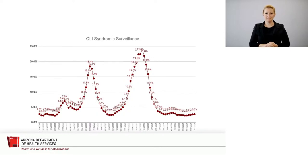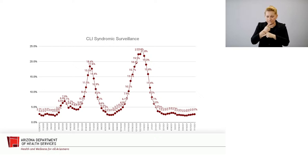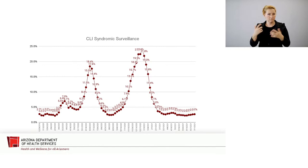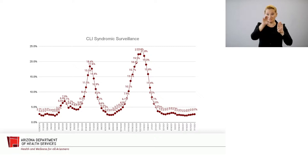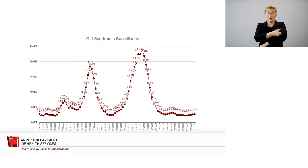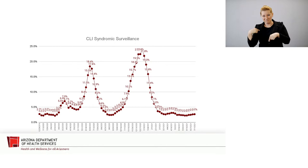The department uses syndromic surveillance to assess hospital usage and how much capacity is being utilized for syndromes similar to COVID-like illness. This was determined to be a very sensitive predictor for increases and decreases in hospital usage. Over the past couple of months, hospital usage has been relatively stable per syndromic surveillance, but we are seeing a slight uptick in the percent of hospitalizations due to COVID-like illness.